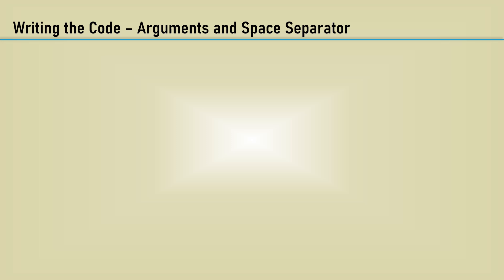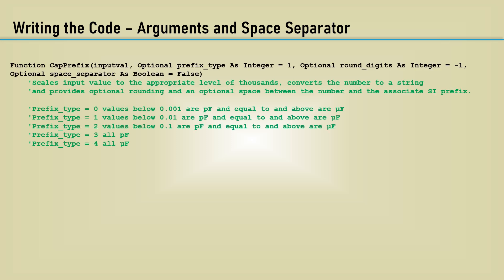Let's code this thing up. I'm calling it cap prefix. Here are the argument definitions with their associated defaults. Then, just like in the engineering prefix code, we will make the variable sep as a space if the space separator argument is true. Otherwise, it will be null.